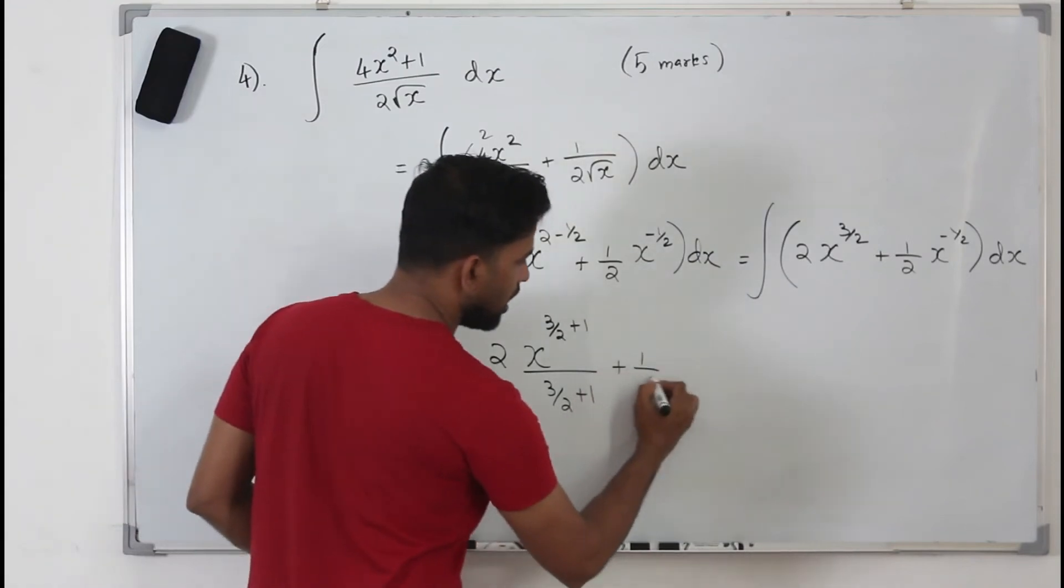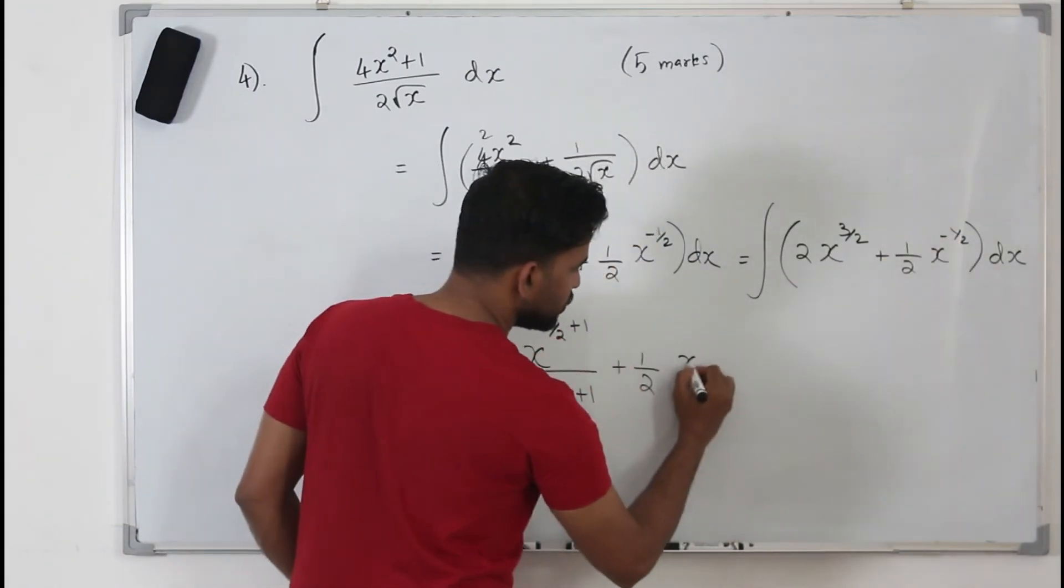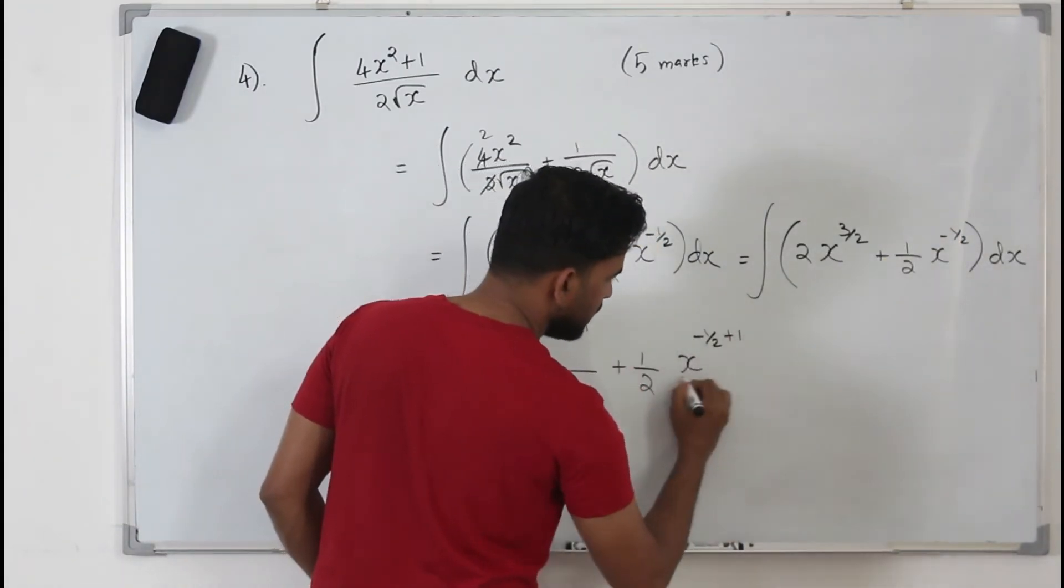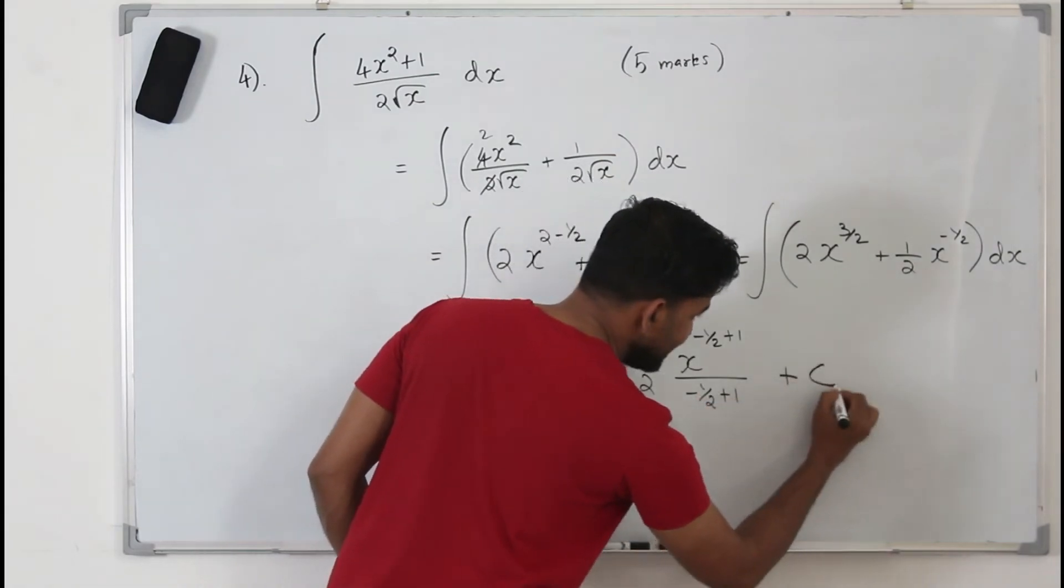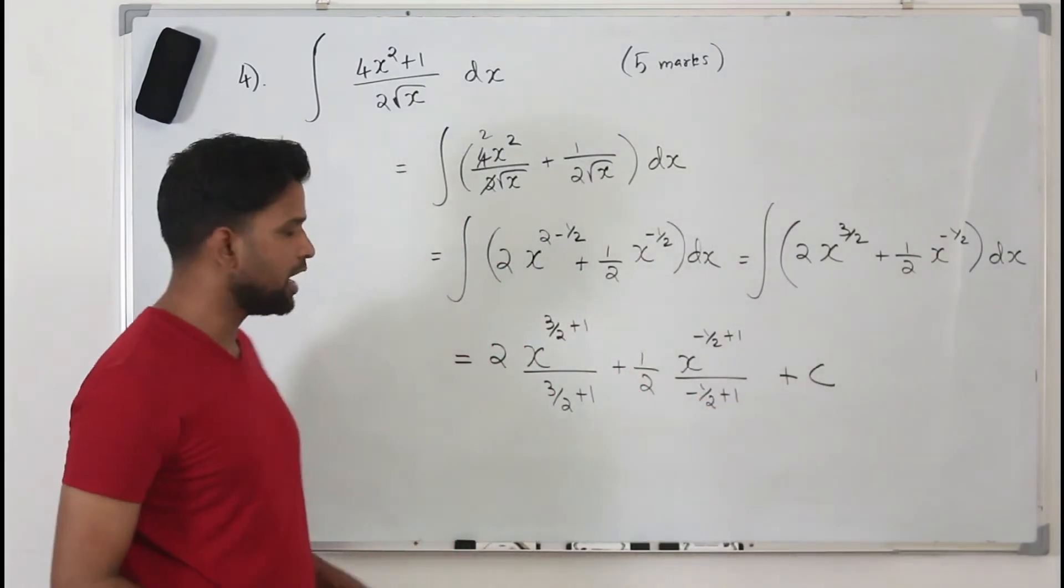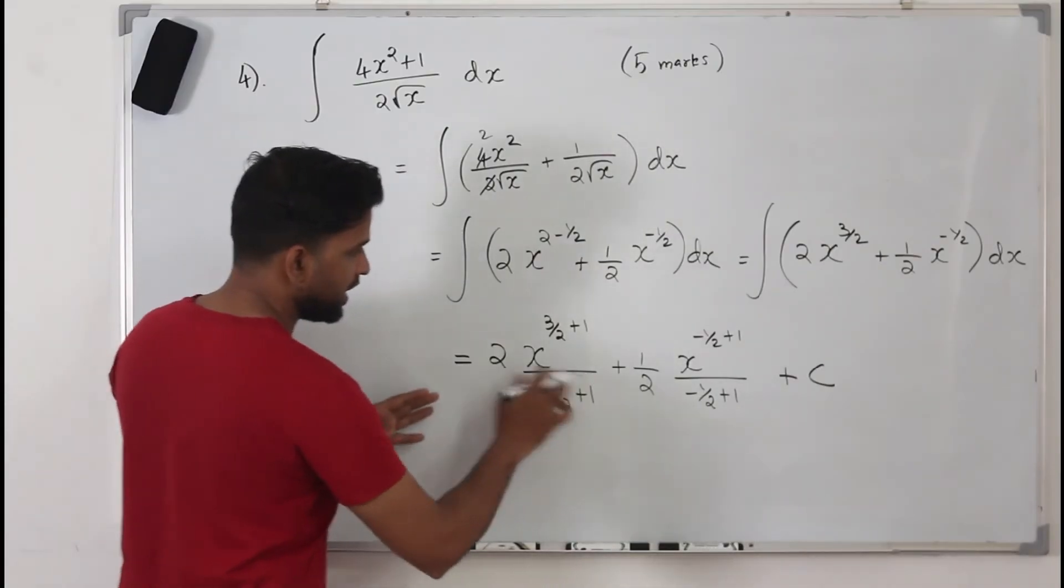Plus half x to the power n. So x to the power n plus 1 divided by n plus 1 and plus c, this fellow is very important, plus c, add plus c. Now it's all about simplification.